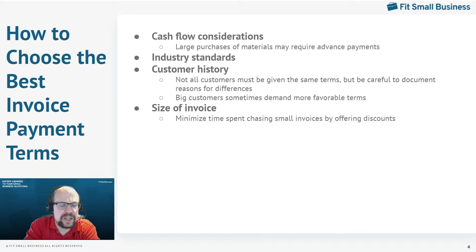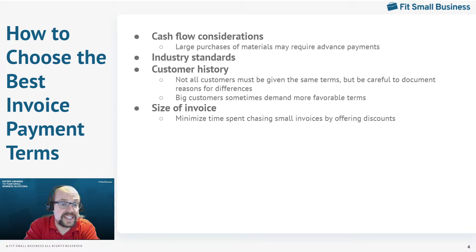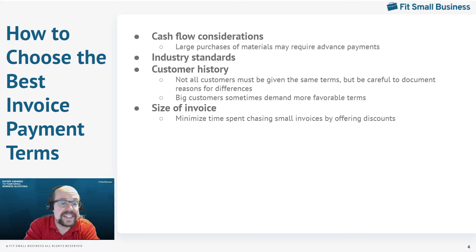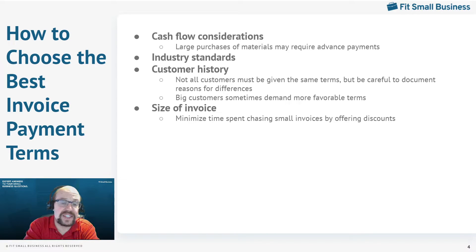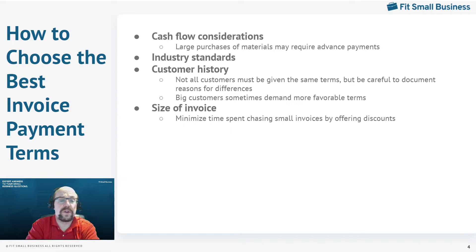The final customer consideration is big customers. Big customers sometimes demand certain payment terms — especially if you're a small company wanting to do business with them, they may set their own terms, such as net 60. Maybe you generally only give customers 30 days to pay, so you'll have to decide whether that customer is worth giving 60 days. Make sure you consider cash flow: can you afford to provide services to this customer if you don't get paid for 60 days? Perhaps you can't — in which case, no matter how big the customer, you simply can't do it. You'll run out of cash. We all love big customers, but when they demand their own payment terms, make sure it's something you can afford.